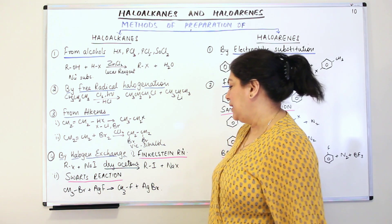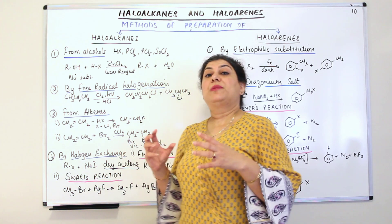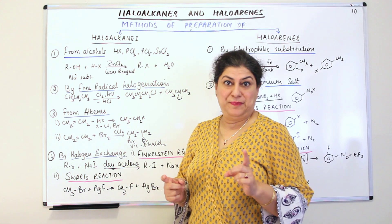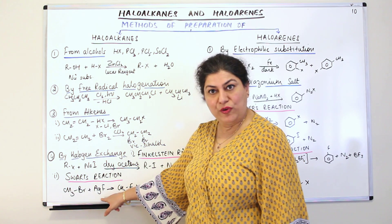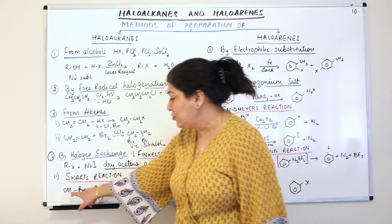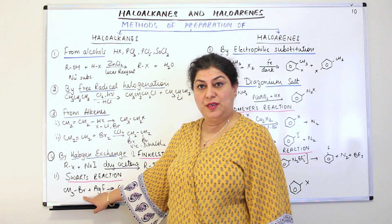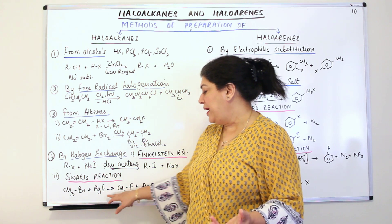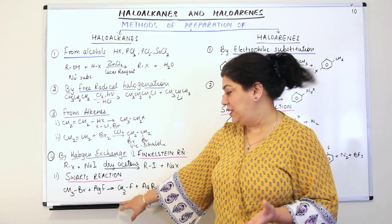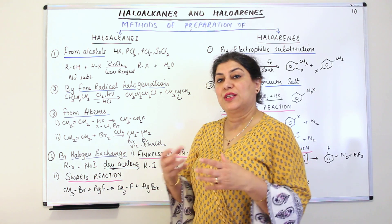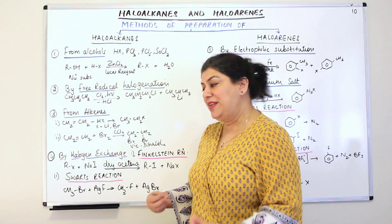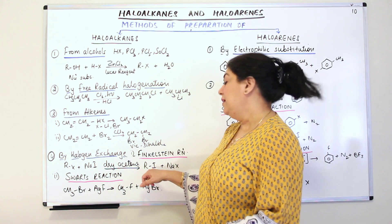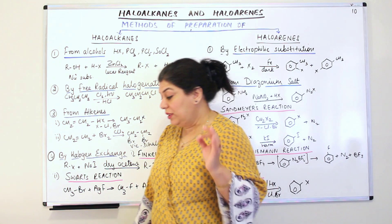The Swartz reaction, on the other hand, is used only to substitute the halogen — chlorine or bromine — with fluorine. You use a metallic fluoride, for example silver fluoride. CH3Br reacts with silver fluoride and you get the fluoro derivative. So Swartz reaction is the halogen exchange method in which you get the fluoro derivative, while Finkelstein reaction is the halogen exchange method in which you get the iodo derivative.